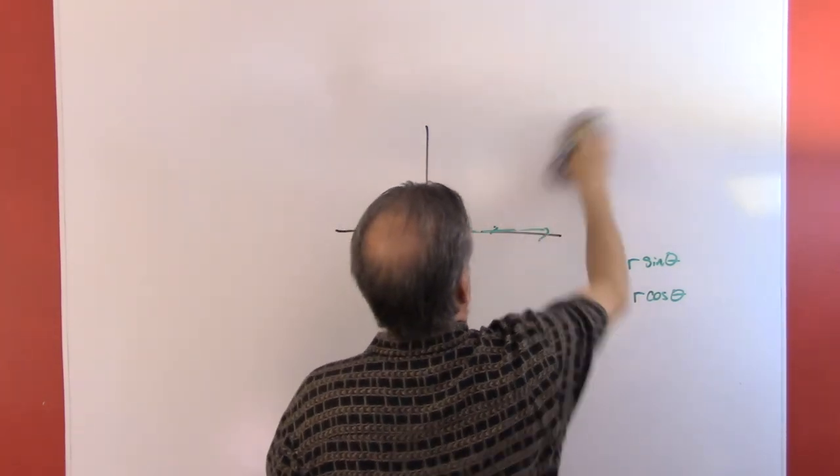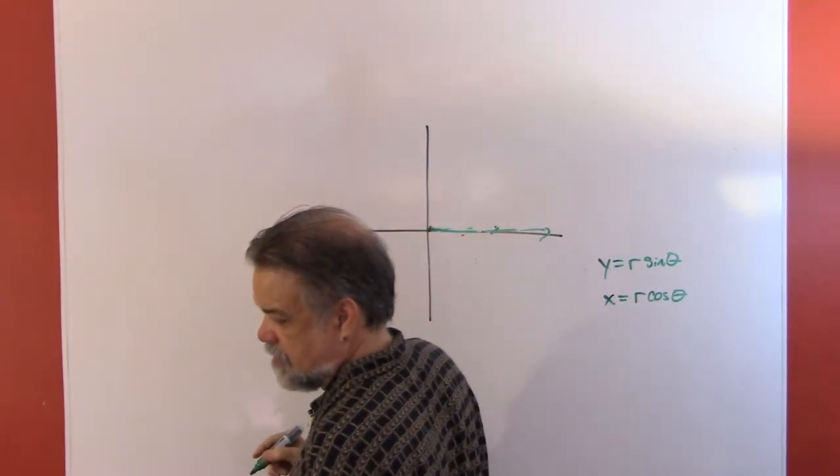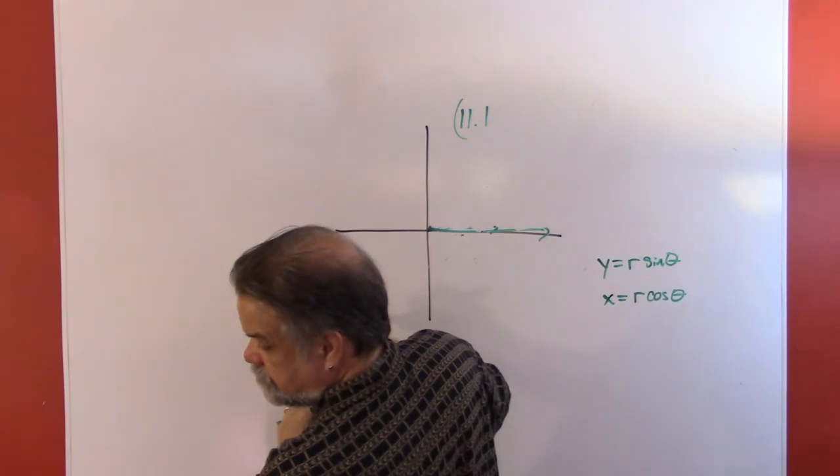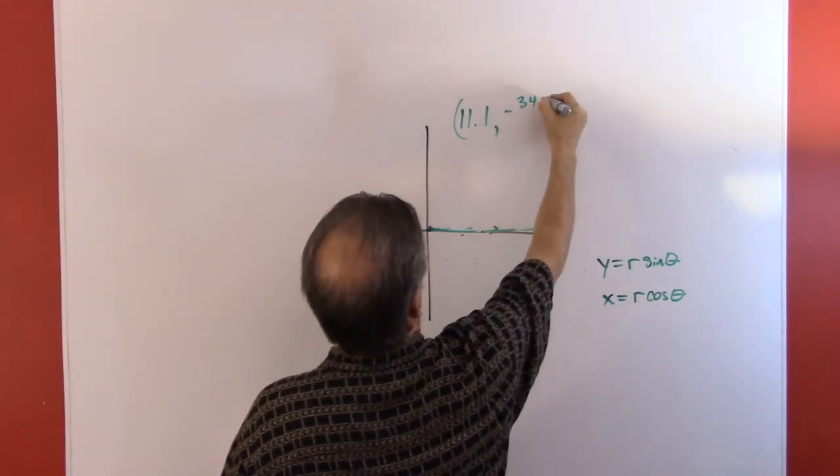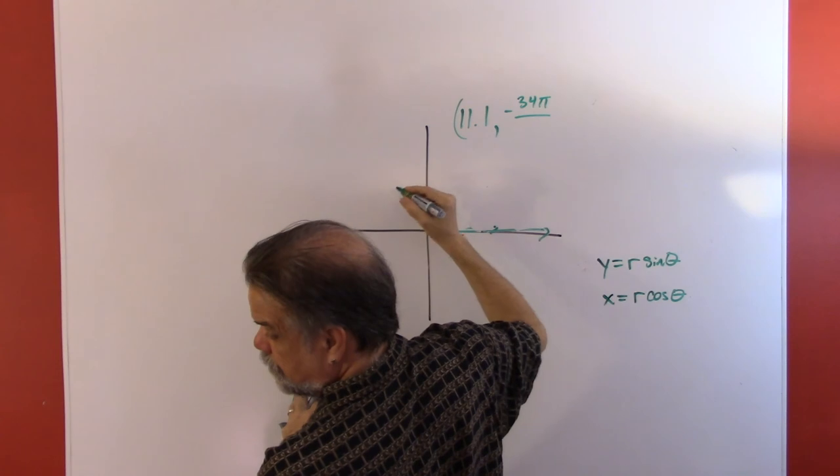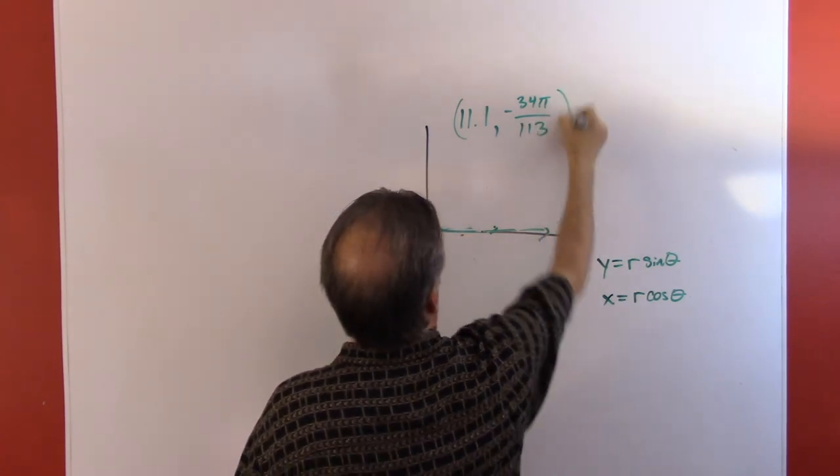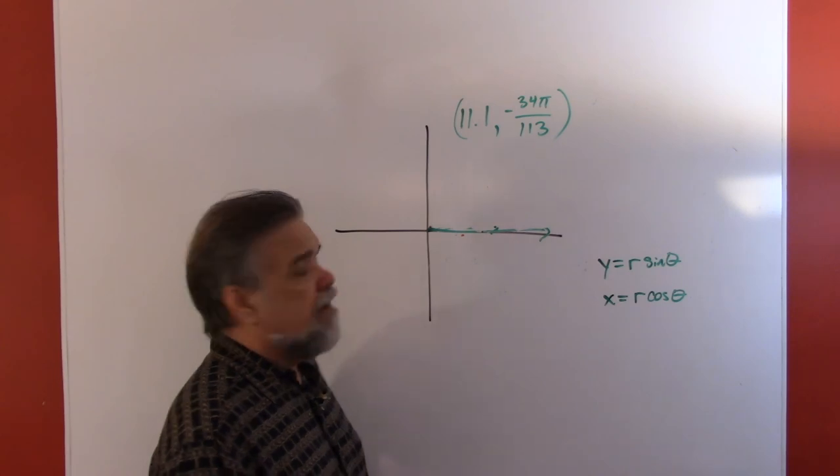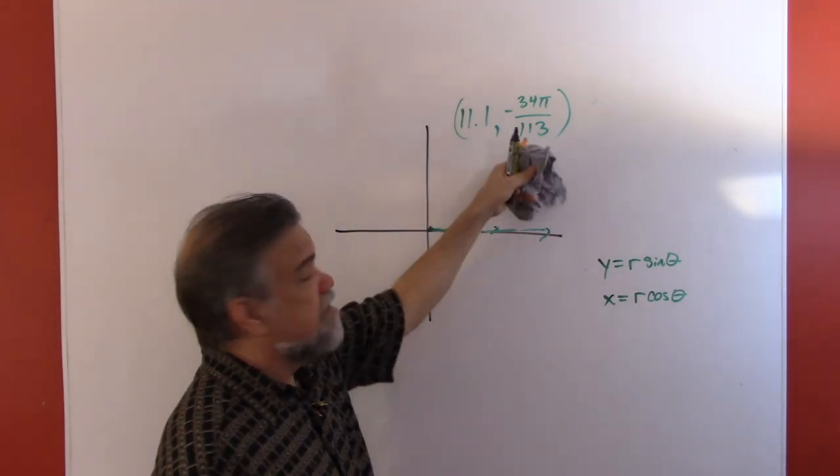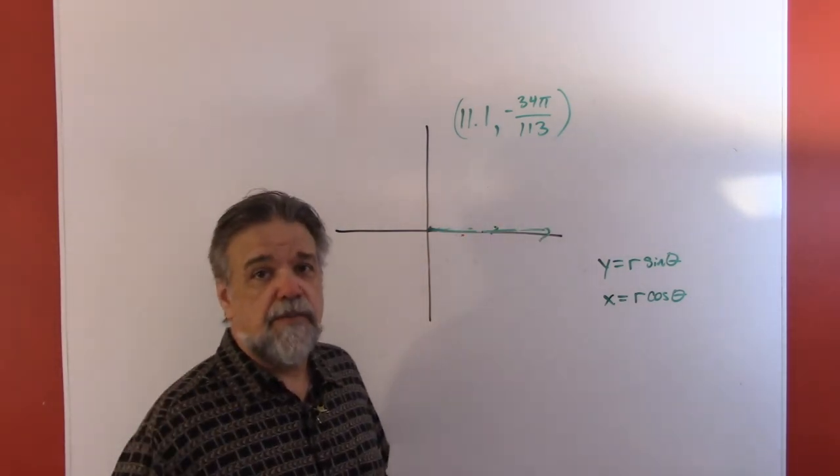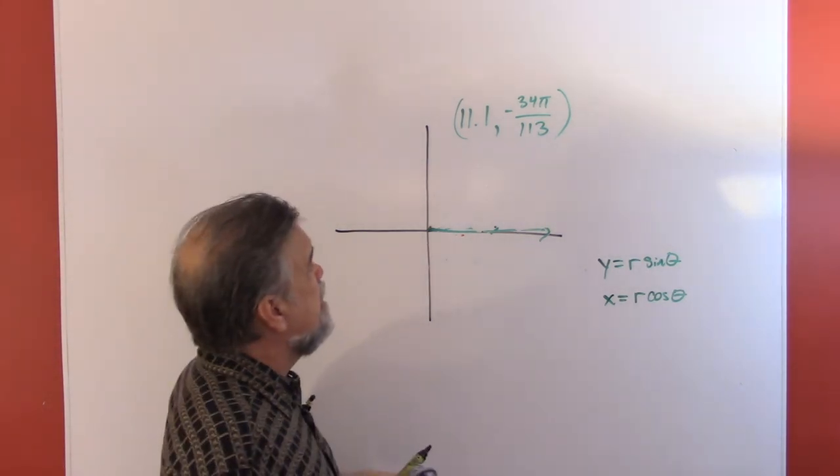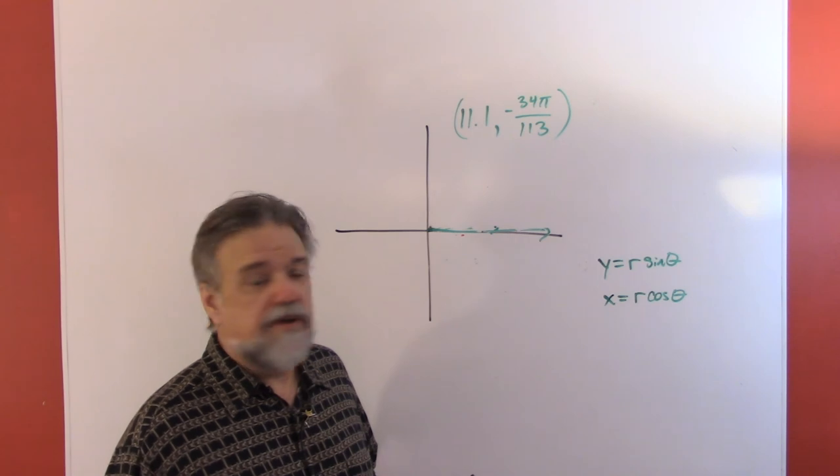Let's do the point (11.1, -34π/113). This is obviously in radians. Grab that calculator again, put it in radian mode while you're thinking about it right now, and then let's figure out what our x and y are going to be.